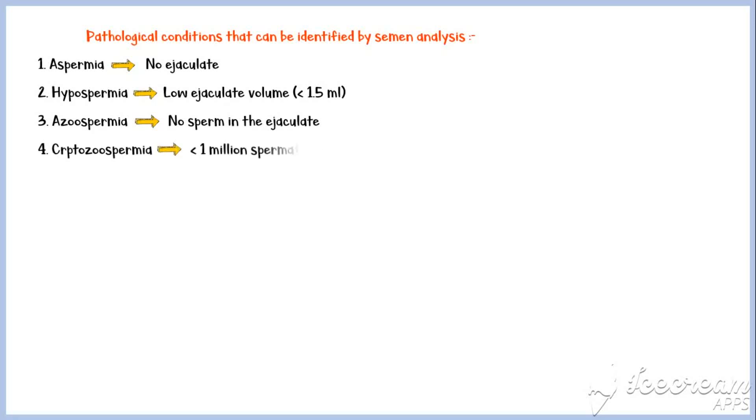Cryptozoospermia, or less than 1 million spermatozoa per 1 milliliter of the ejaculate. Oligospermia, or less than 15 million spermatozoa per 1 milliliter of the ejaculate.